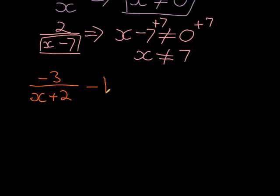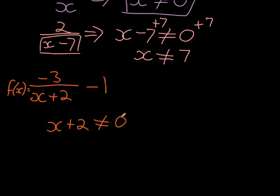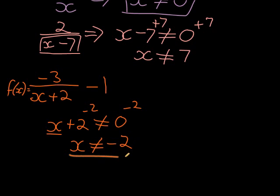One more example for fractions. We have f(x) equals negative 3 over x plus 2, minus 1. To work out my domain, my denominator is x plus 2 — nothing else — and it may not equal zero. I may not divide by zero. So I solve for x by subtracting 2 on both sides, and I get x is not equal to negative 2. You can see why: negative 2 plus 2 gives me zero, and therefore x may not be equal to negative 2.